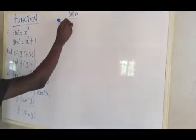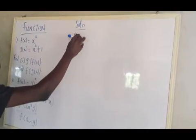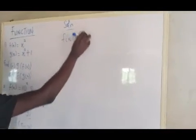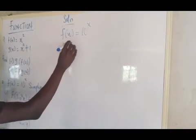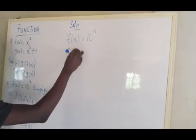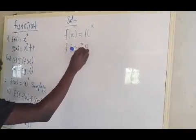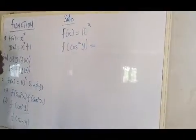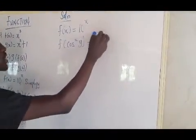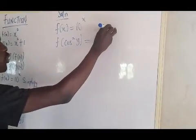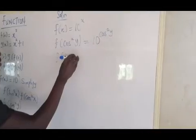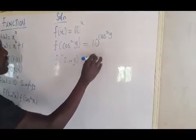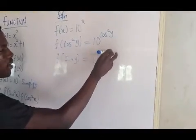This one says you should find, don't forget f(x) is 10^x. Now to find f(cos²y) and f(sin y). My f(cos²y) will be 10^(cos²y), and my f(sin y) will be 10^(sin y).